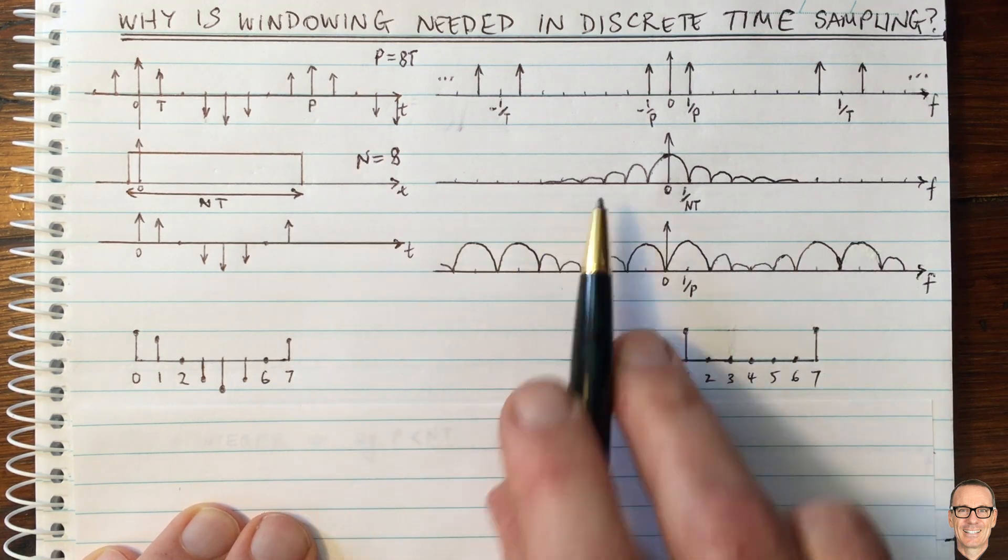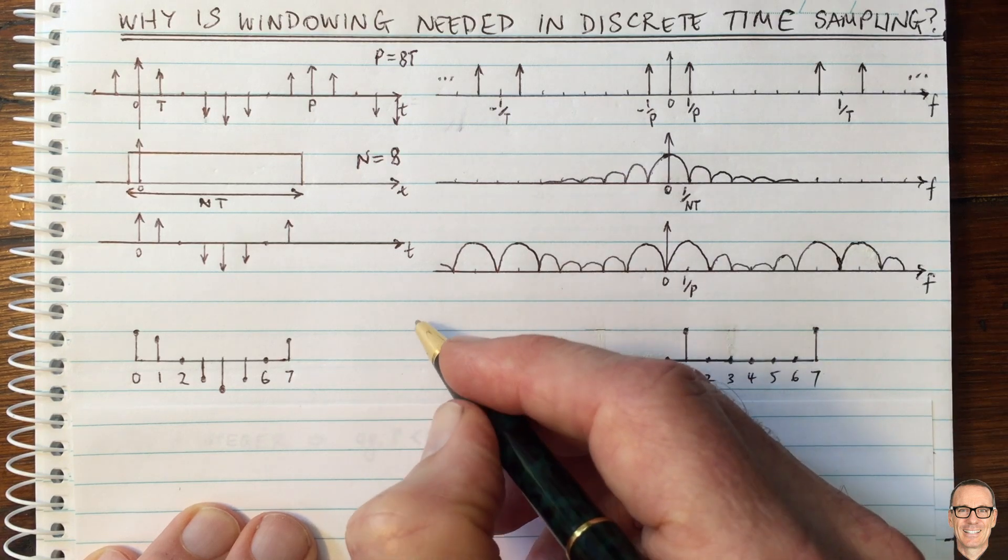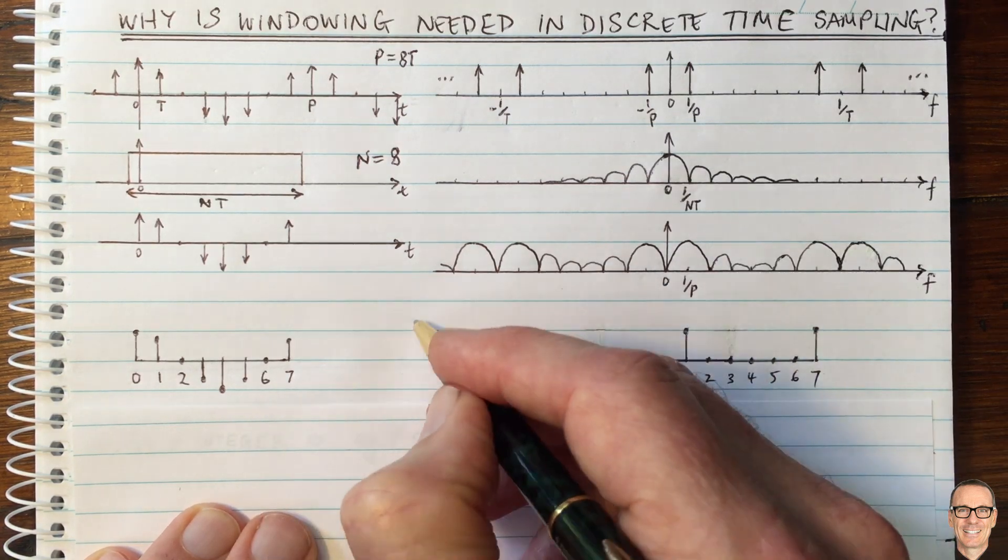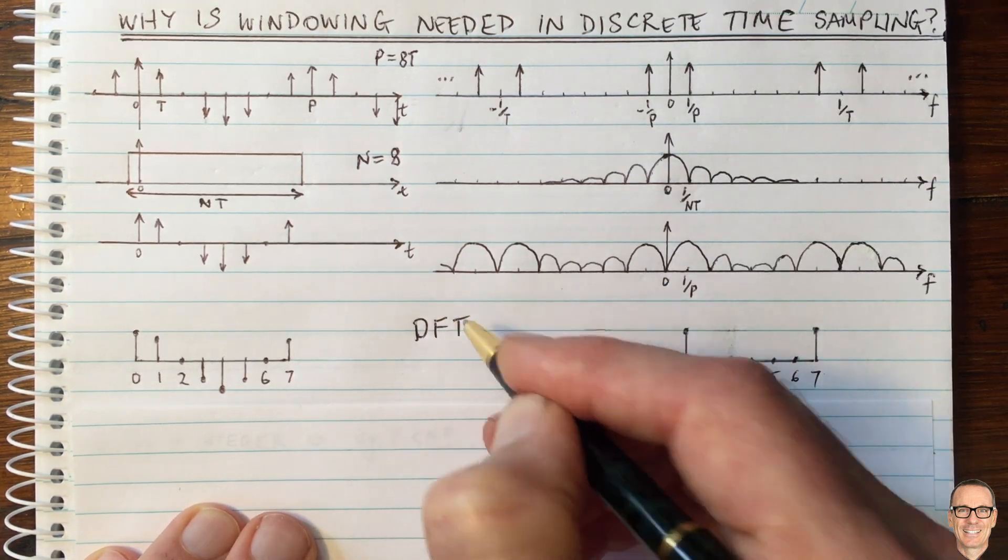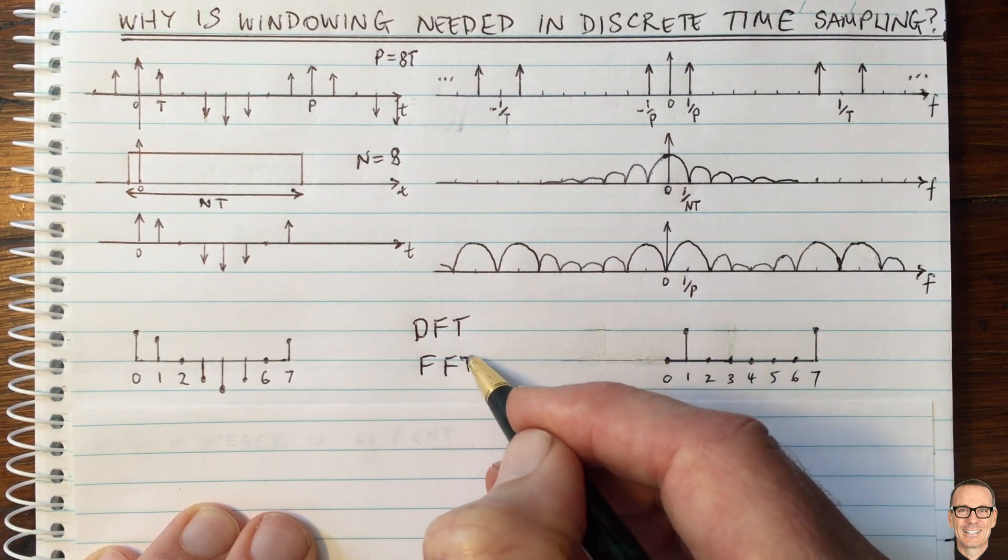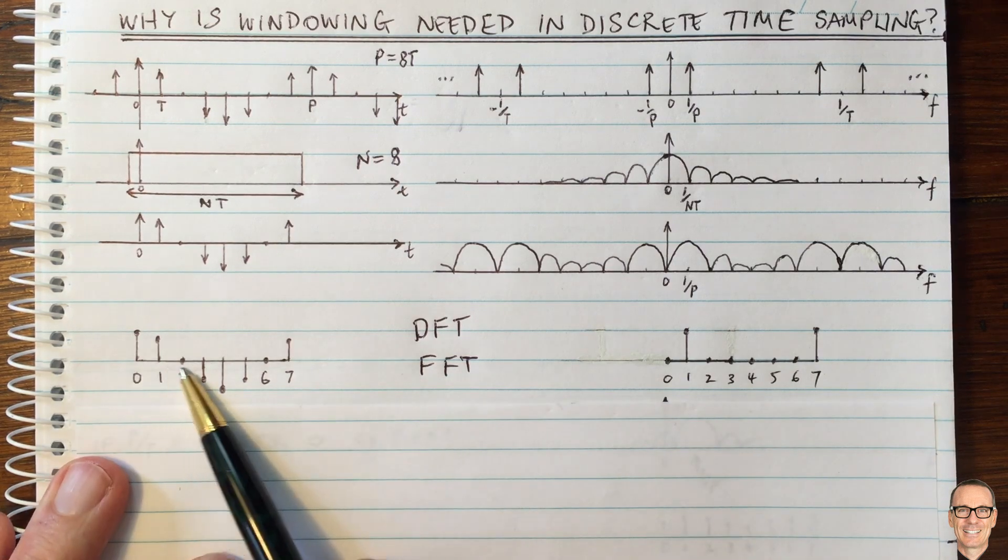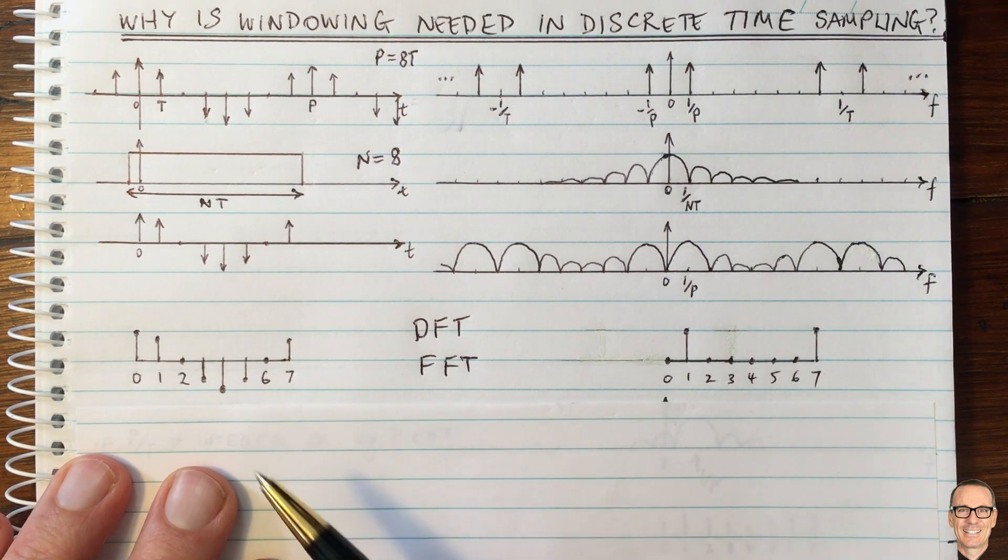Now we don't have the Fourier transform anymore. We have the discrete Fourier transform. In fact, another version of that or an implementation of that is more commonly known as the fast Fourier transform, the FFT. So now we only have this finite length of numbers,